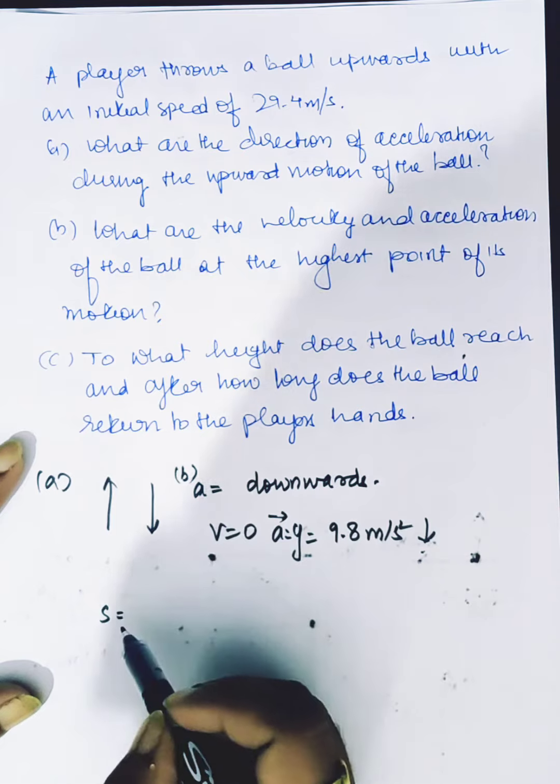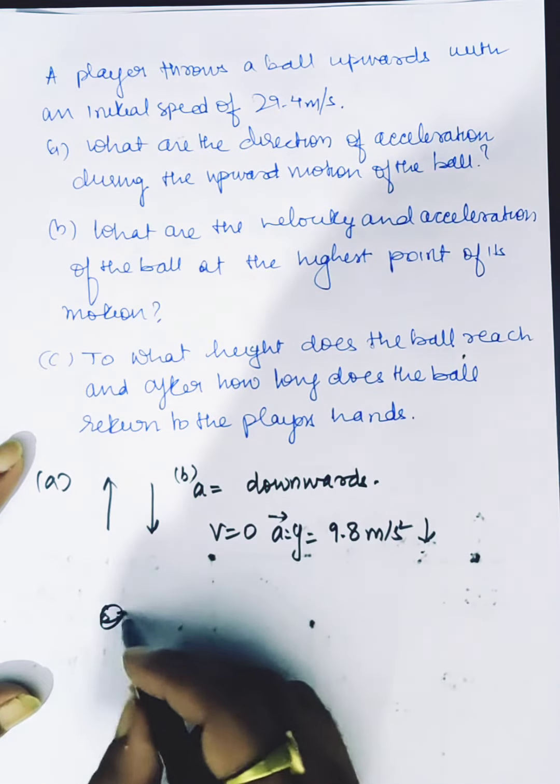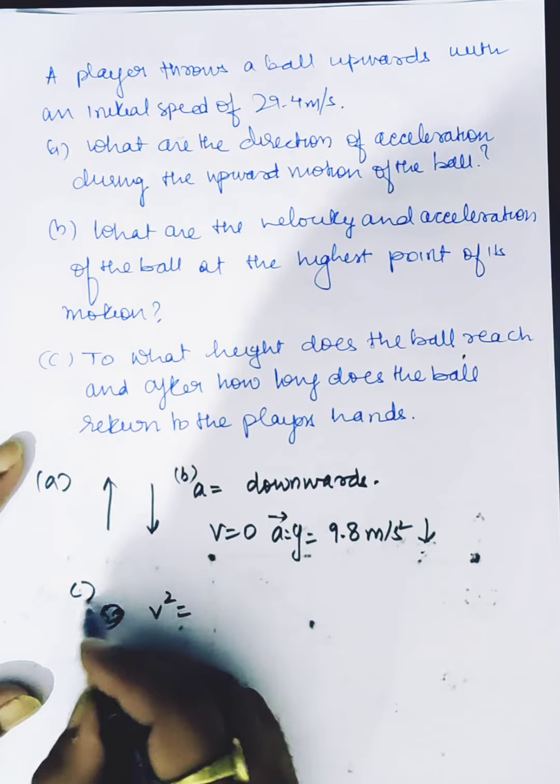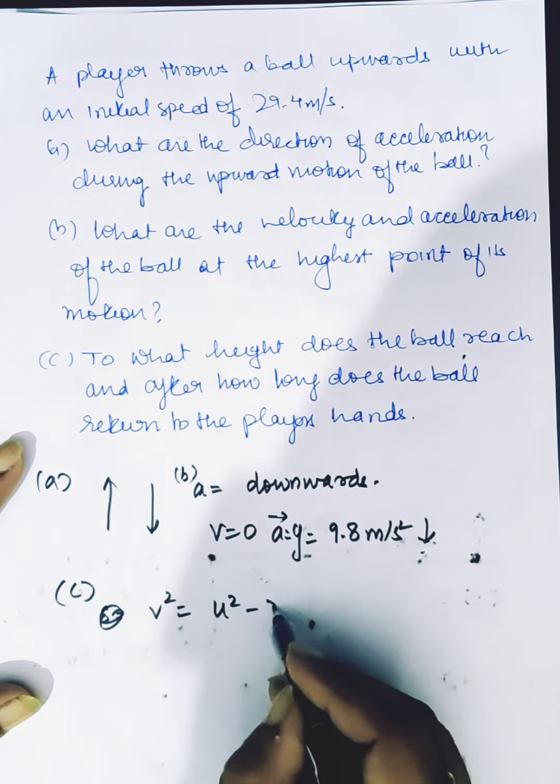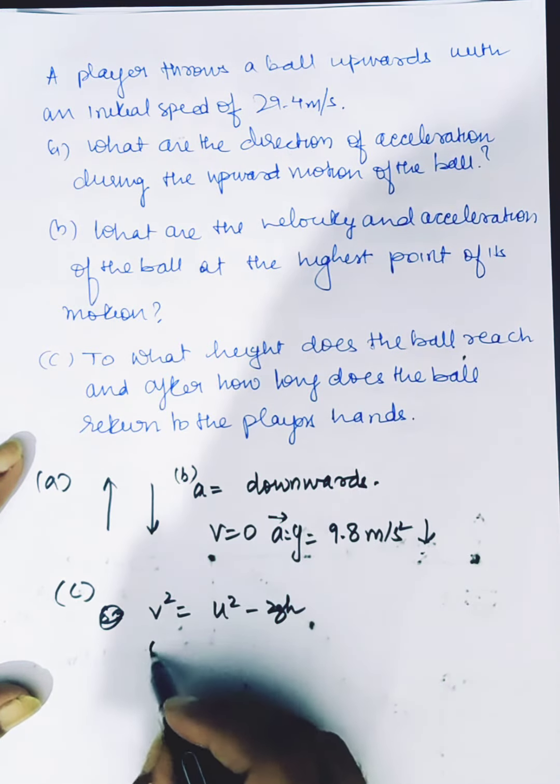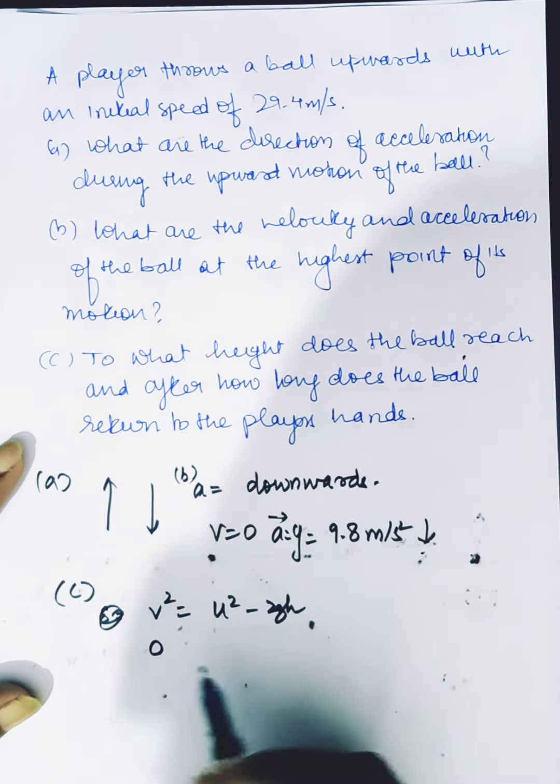We use the equation v² = u² - 2gh. Since final speed is 0 at the highest point, we need to find to what height the ball reaches.